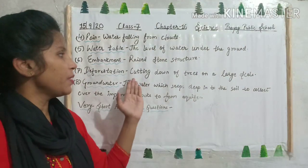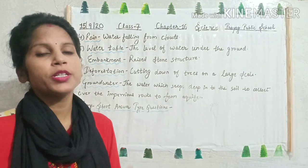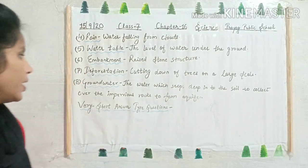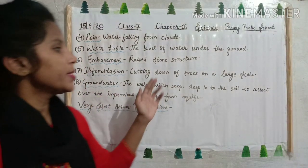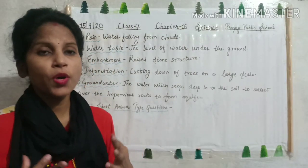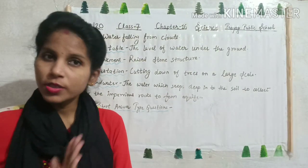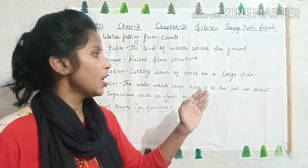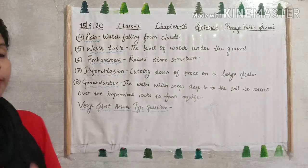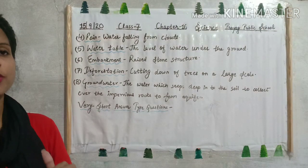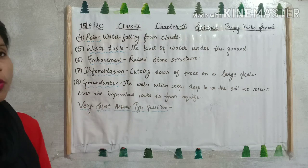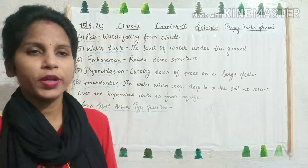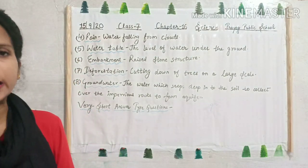Deforestation means cutting down of trees or thinning of trees on a large scale. Then ground water — the water which seeps deep into the soil. When rain comes, the water goes deep into the soil to collect over the impervious rocks — jo impervious rocks ke upar ja ke water collect hota hai — to form an aquifer. That water is called ground water. So this was all about the key terms of the chapter.